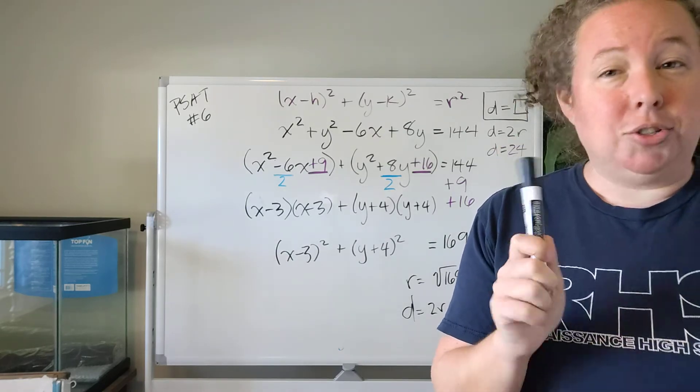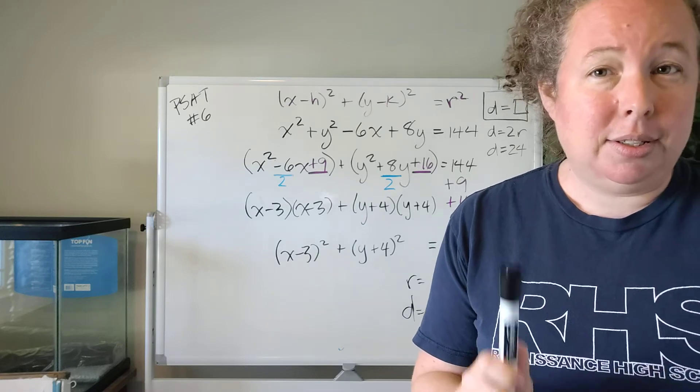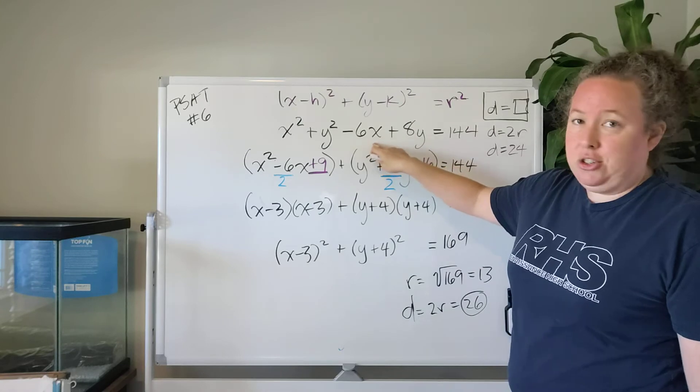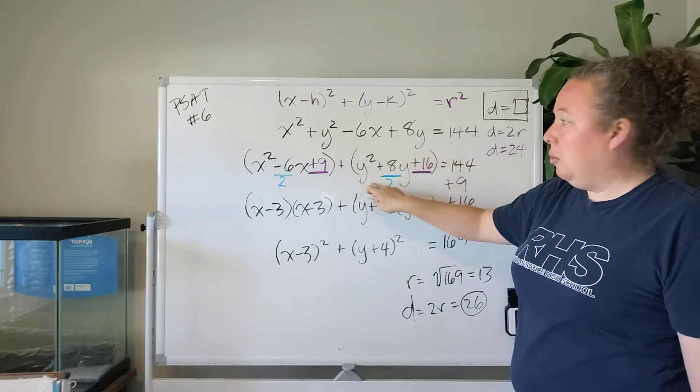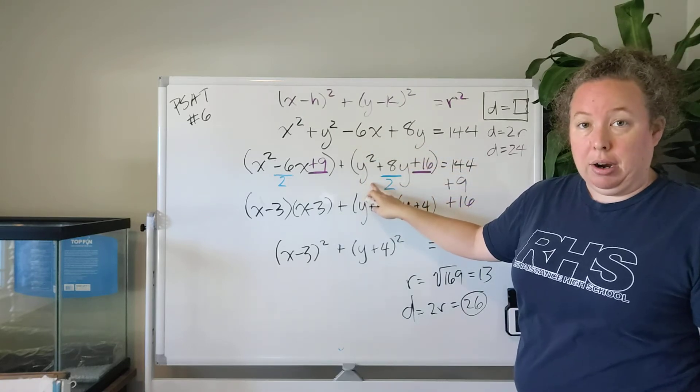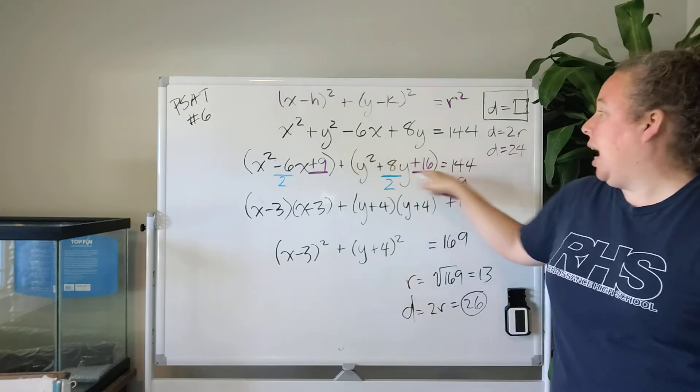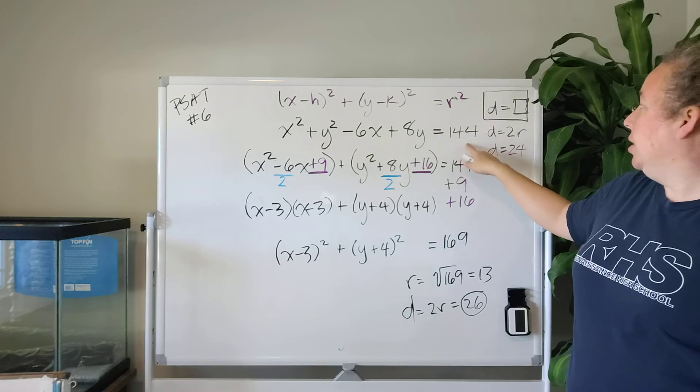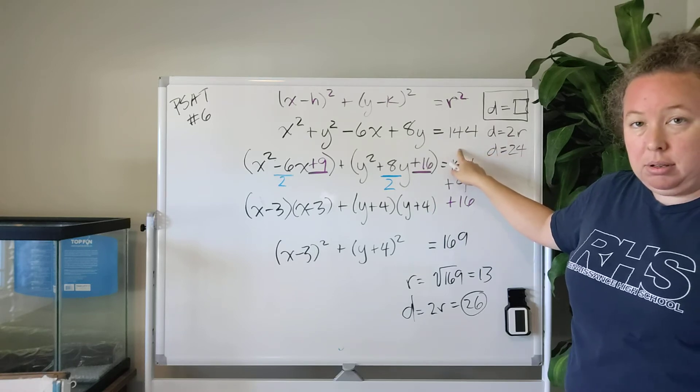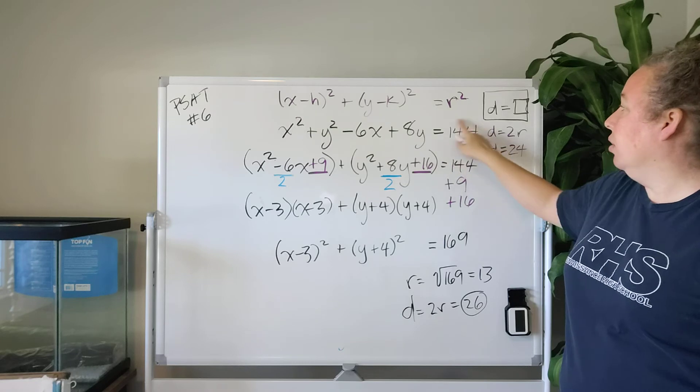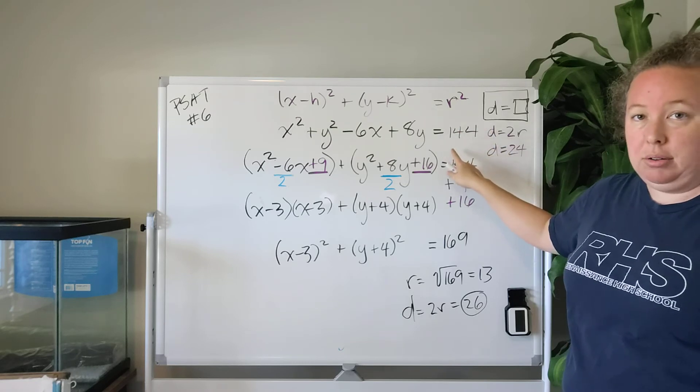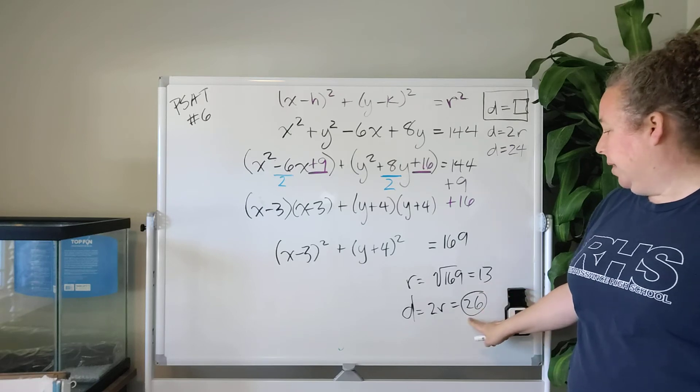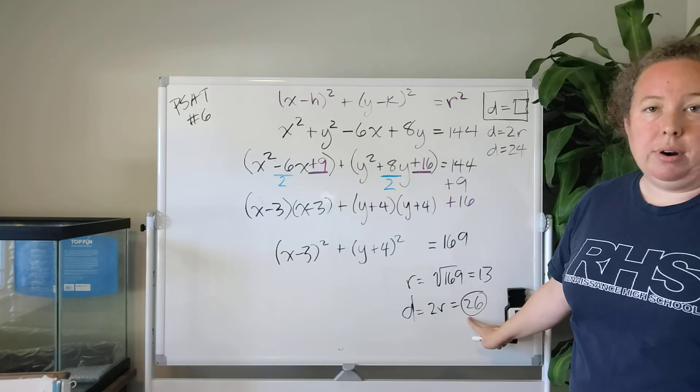Doing this has also taught us something important. Which is, if we're given an equation like this and we know we're going to have to complete the square, we know that the radius, because we're going to have to add stuff, the radius is going to be bigger than whatever this number is here. In fact, in this case, instead of 12, it's 13. And therefore, the diameter instead of 24 is 26.